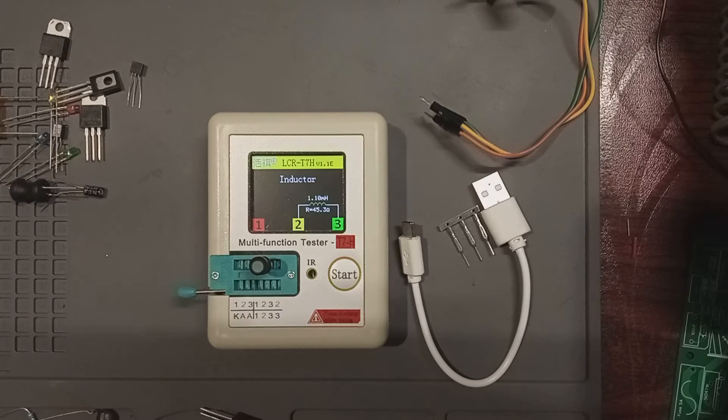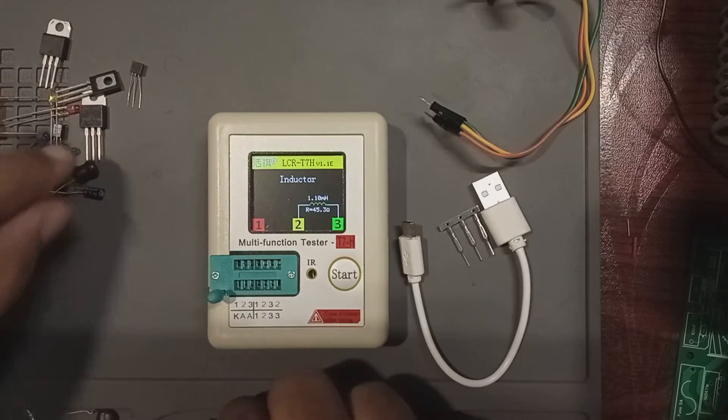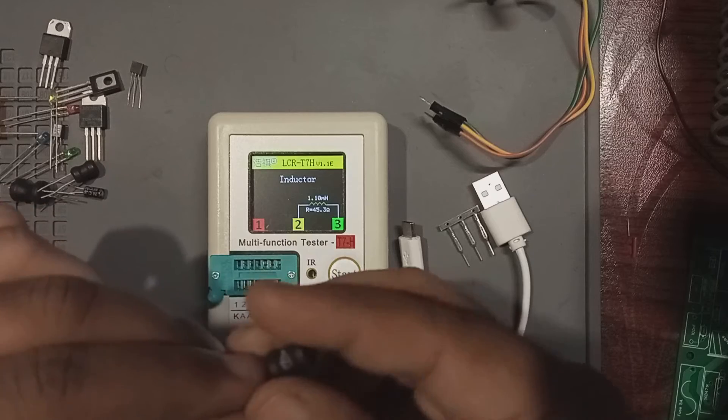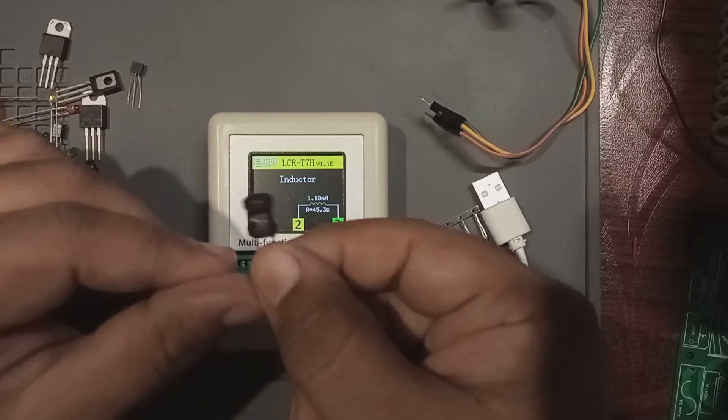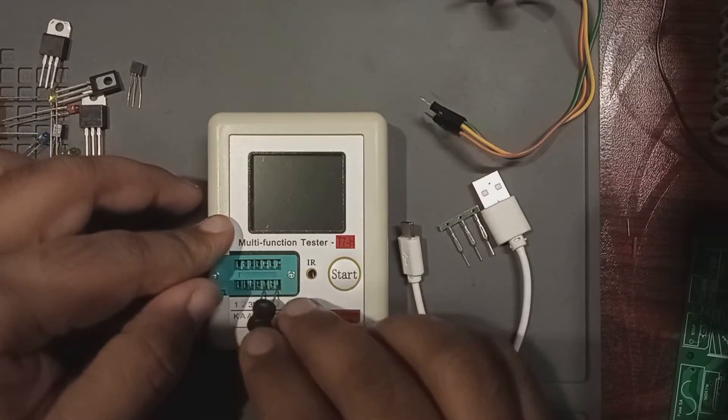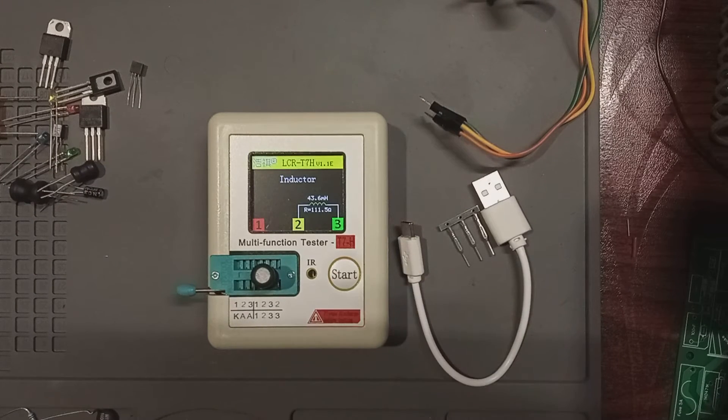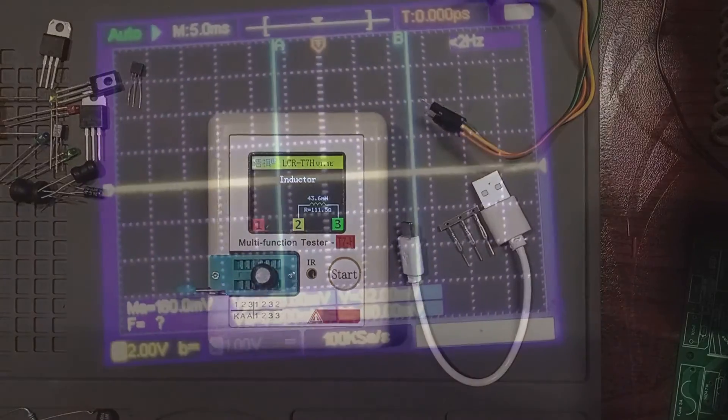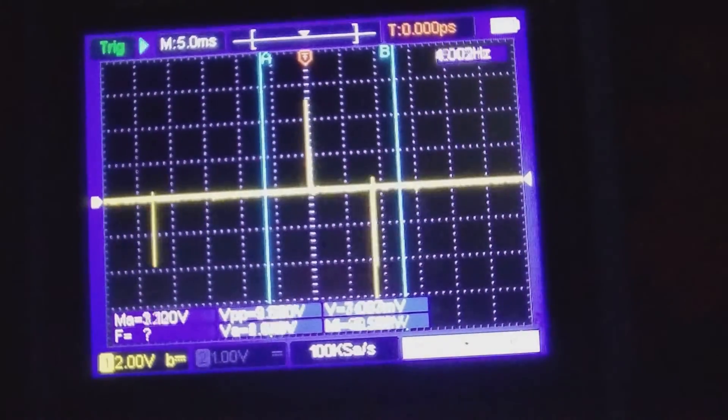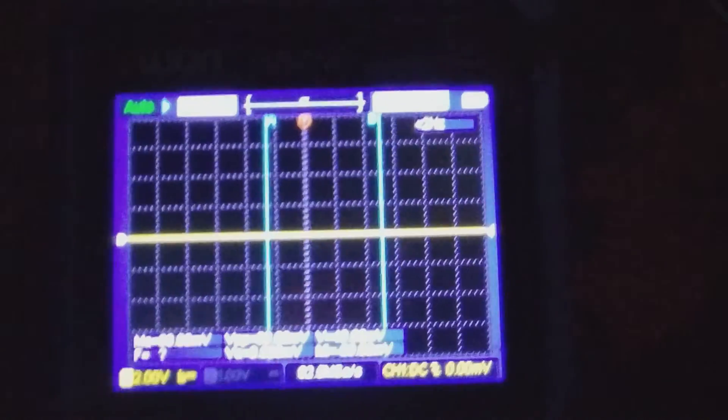Now let's connect the other one that I have from Bourns, which is 47 millihenries. It also has that written on this heat shrink here. Now let's press the start button and we can see that it is 43.6 millihenries with an ESR of 111.5 ohms. Now I haven't measured the frequency so far, but it will probably be 1 kilohertz which is standard amongst cheap LC meters with low frequency switching options like this.